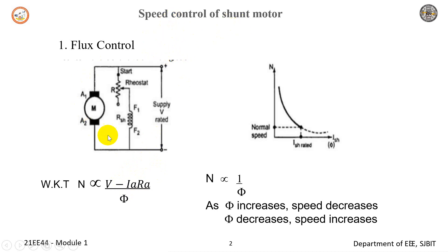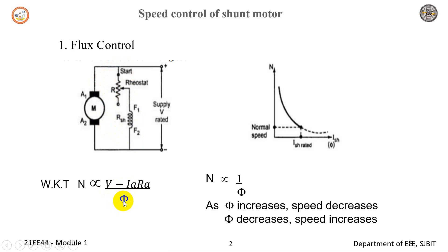This is a simple symbolic representation of a DC motor showing variation of flux in the flux control method. When you look at this particular circuit, you can see that the armature field is being connected to an external rheostat. There is an addition of an external rheostat to vary the flux in the field.